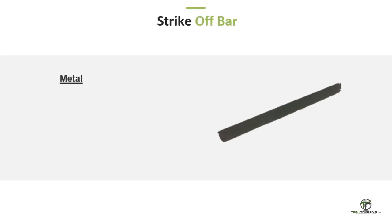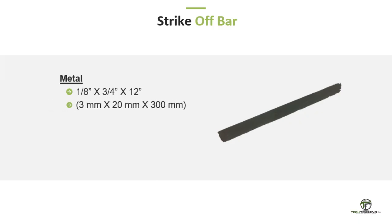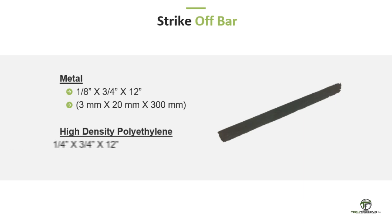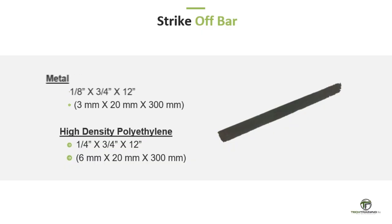A flat, straight steel bar at least one-eighth of an inch thick, three-quarters of an inch wide, and 12 inches long — that is, 3 mm thick, 20 mm wide, and 300 mm long. Or a flat, straight, high-density polyethylene bar or other suitable plastic, at least one-quarter inch thick, three-quarters of an inch wide, and 12 inches long, or 6 mm thick by 20 mm wide and 300 mm long.